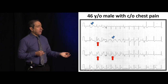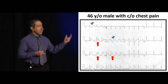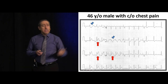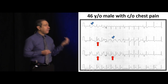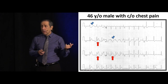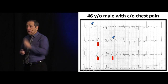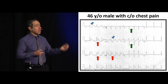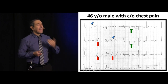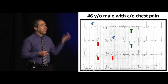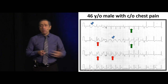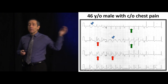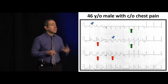Whenever we have inferior myocardial infarction, two thoughts come to mind: is the right ventricle involved, and is the posterior involved? On the same EKG, look for ST segment elevation in V1. If you have that, the clot is evolving very proximally. In this patient, IV fluids are very important. We don't want to give nitrates, beta blockers, or morphine, because all of those will cause hypotension. These patients are preload dependent.